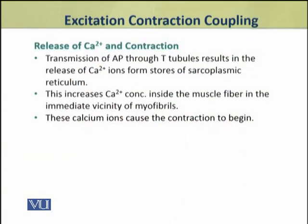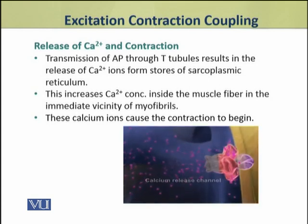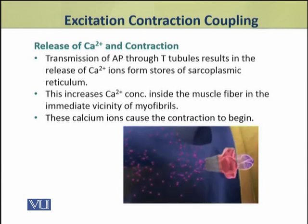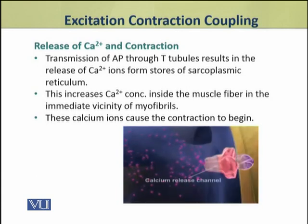The transmission of action potential through the T-tubules results in the release of calcium ions from the stores of sarcoplasmic reticulum. The sarcoplasmic reticulum stores calcium ions, and when the action potential is transmitted through the T-tubules, it acts upon the sarcoplasmic reticulum, causing calcium ions to be released.